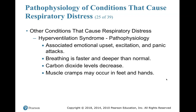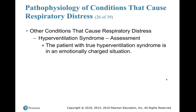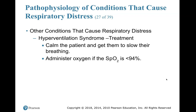Hyperventilation syndrome pathophysiology is associated with emotional upset, excitation, and panic attacks. Breathing is faster and deeper than normal. Carbon dioxide levels decrease. Muscle cramps may occur in feet and hands. Assessment: the patient with true hyperventilation syndrome is in an emotionally charged situation. Treatment: calm the patient and get them to slow their breathing. Administer oxygen if the SpO2 is less than 94%.